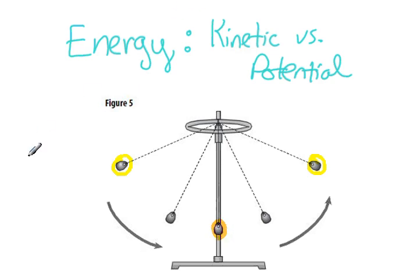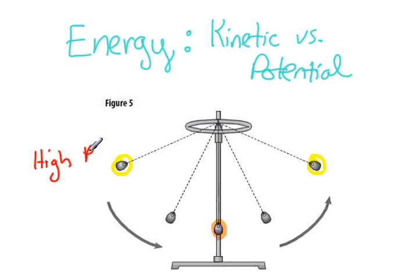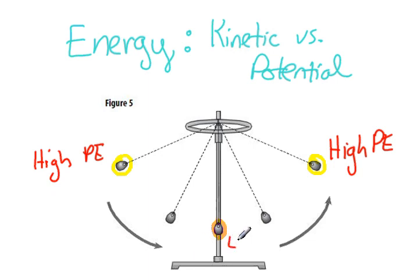Since the bob will be moving the slowest at either end, this is where we would have high potential energy. It's also the furthest from the base of the swing. When it's directly beneath where it's tied off, it would have low potential energy.